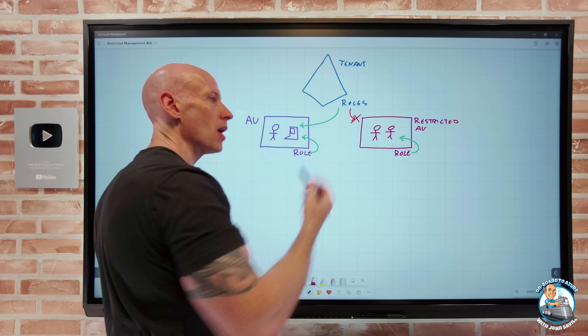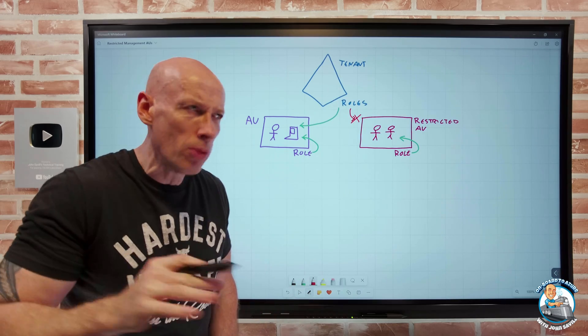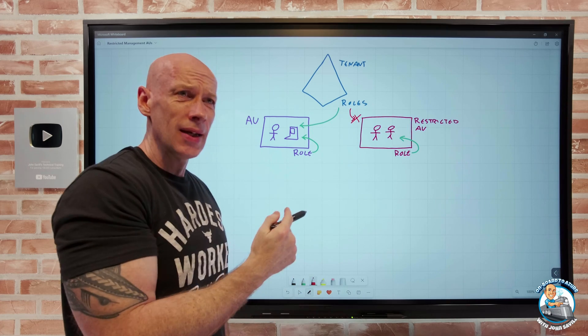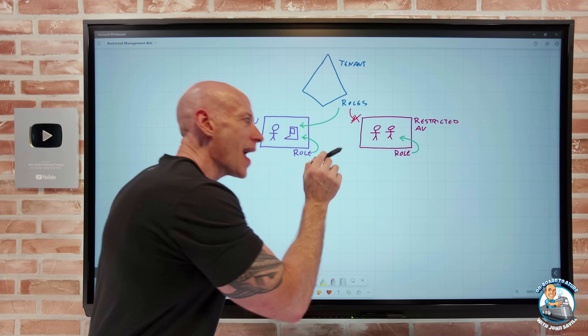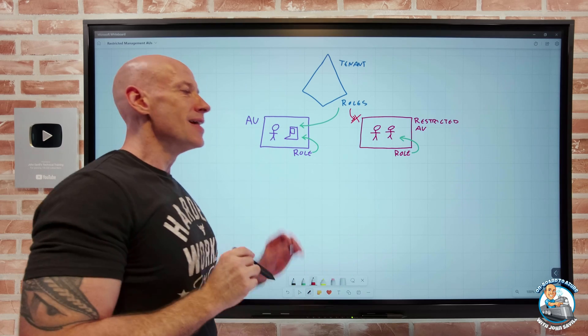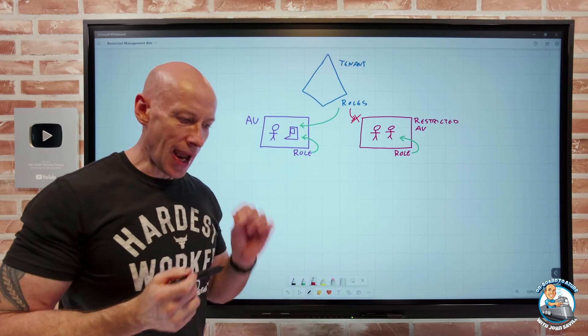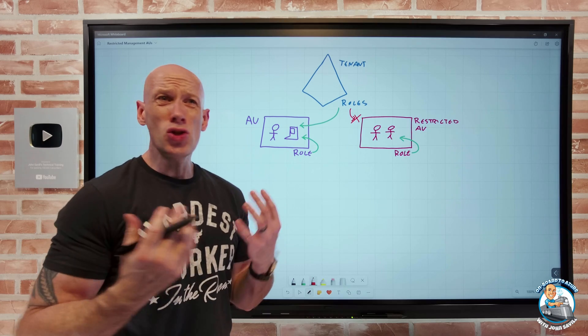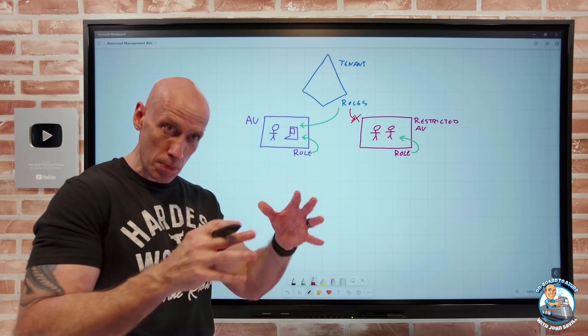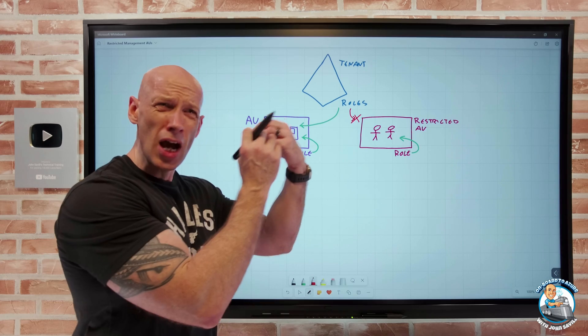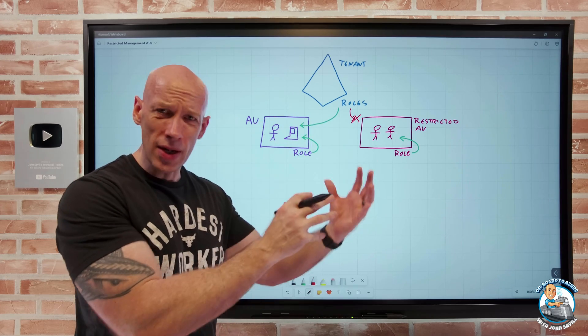But outside of those two roles, if I was just a help desk admin at a global level or any other role, this is absolute. They would have no ability to impact anything within this restricted administrative unit. I have to have the role given, specifically scoped at that AU. And the whole point is, you should not have many people that are global admins or that privileged role administrator. They should be super, super locked down anyway, your most trusted organizations administrators.